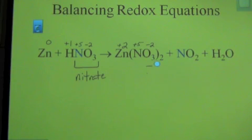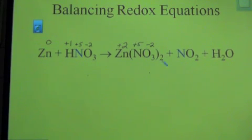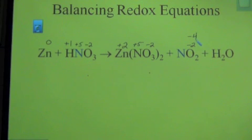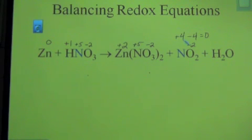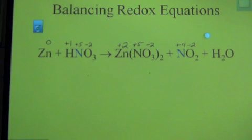We need to continue and assign oxidation numbers for the other two products. For NO₂, oxygen is −2, so we're trying to balance out −4; this is neutral, so nitrogen must be +4. The oxidation number for nitrogen in NO₂ is +4. For water, it's always +1 for hydrogen and −2 for oxygen.